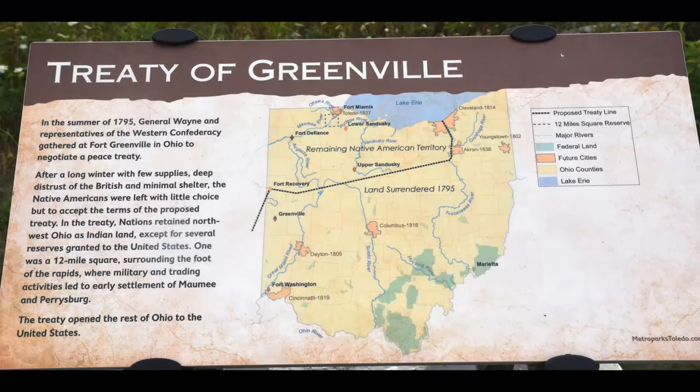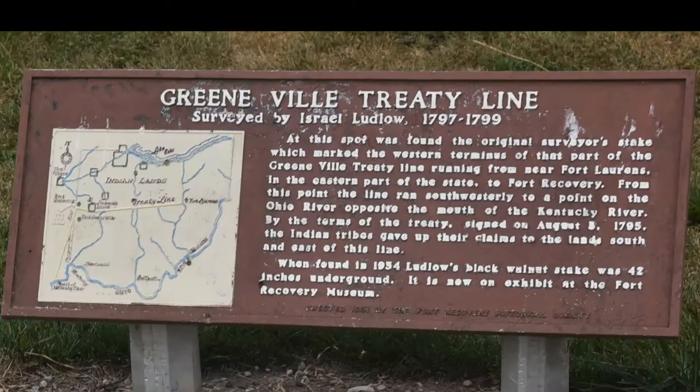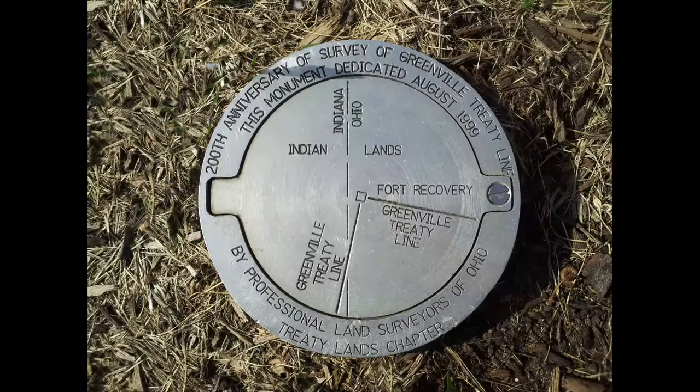The tribes basically went home and gave up, eventually going to the Greenville Treaty. And finally, this was one of the first times ever that America had signed and negotiated a treaty among the people who actually lived in the area where the treaty took place. So, this was the Battle of Fallen Timbers in Ohio.